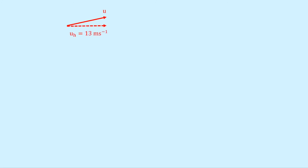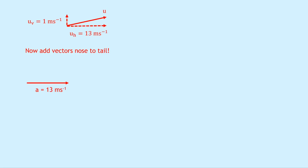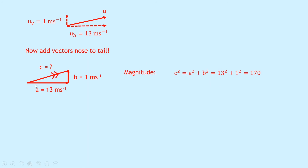To find the angle, we need the resultant velocity from the horizontal and vertical components. Sketching the vector triangle: horizontal component a is 13 meters per second and vertical component b is 1 meter per second. Using Pythagoras: c squared equals a squared plus b squared equals 13 squared plus 1 squared equals 170, so c equals the square root of 170, which equals 13 meters per second. The 1 hasn't significantly affected the 13 value.